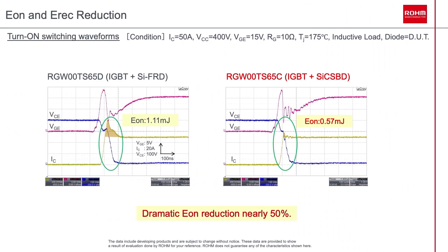Hybrid IGBTs offer several benefits in electronic applications. Comparing them with existing IGBTs, there are significant improvements in many important aspects. These include EON and EREC reduction, VCE-SAT reduction, VPEAK reduction, and overall better system efficiency. Incorporating SiC Schottky barrier diodes in IGBTs significantly reduces energy losses during turn-on and reverse recovery loss by up to 50%. The conventional Roam silicon FRD IGBT features an EON of 1.1 mJ, while the SiC SBD IGBT features 0.57 mJ EON. A switch to Schottky barrier diode IGBTs will limit energy loss during switching and support high current, high voltage applications.